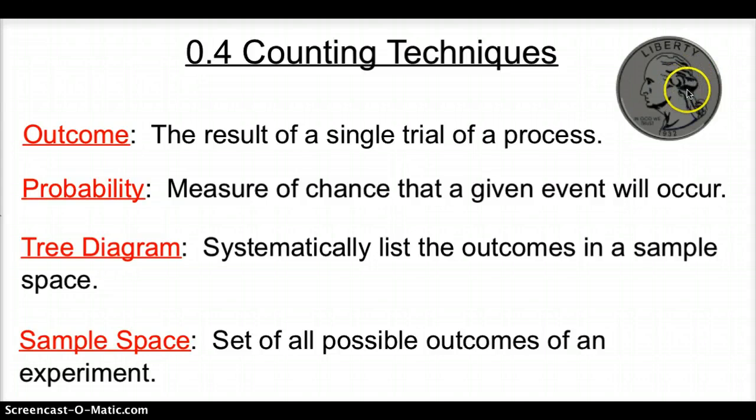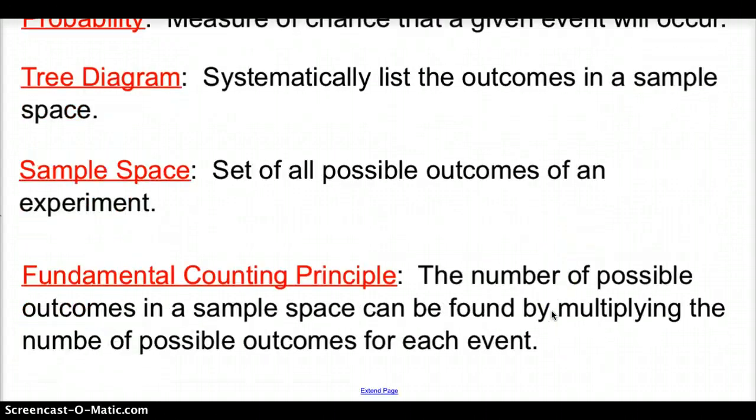Tree diagram, which we'll see on the next slide, is a systematic way of listing the outcomes in a sample space. A sample space is a set of all possible outcomes of an experiment. And then finally, the fundamental counting principle, which the number of possible outcomes in a sample space can be found by multiplying the number of possible outcomes for each event.